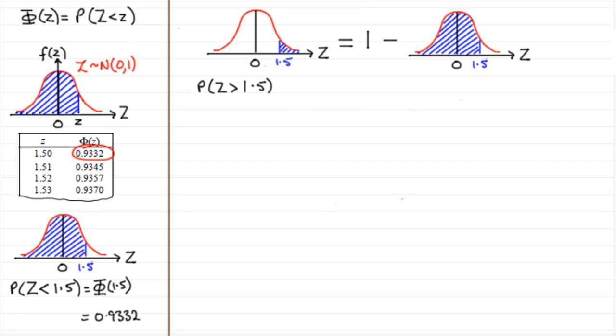and take away the area to the left of 1.5. So all we need to do is 1 minus the probability of z being less than 1.5, or phi of 1.5.